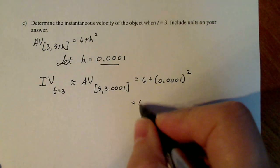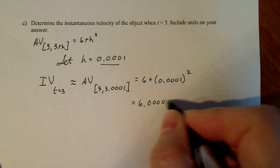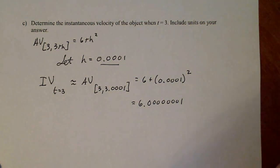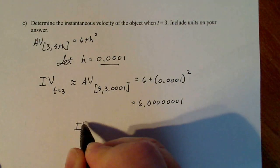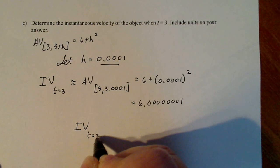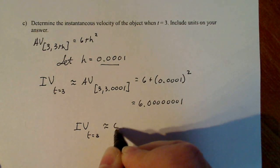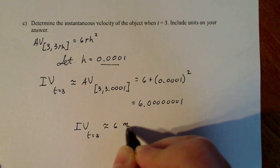So it's going to be 6.0001. So that means I can estimate my instantaneous velocity at t equal 3 to be approximately 6 meters per minute.